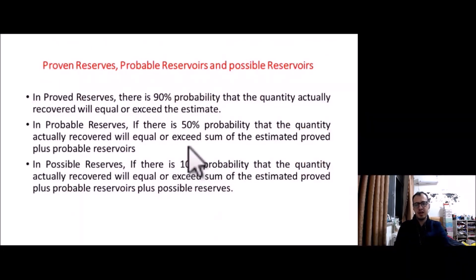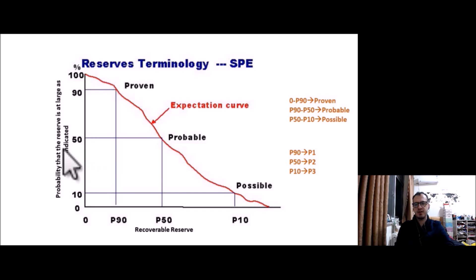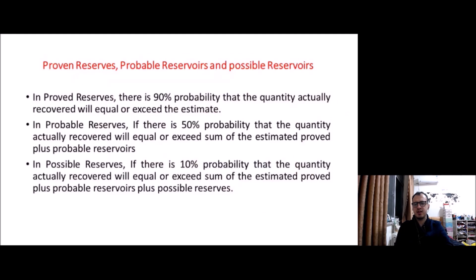What is the probable reserve? Probable reserve is where there is a 50% probability that the quantity actually recovered will equal or exceed the sum of estimated proved plus probable. We already know the proved zone is 0 to P90. Since at P50 we have the sum of proved and probable, and we know the proved portion, the probable reserve spans from P90 to P50.